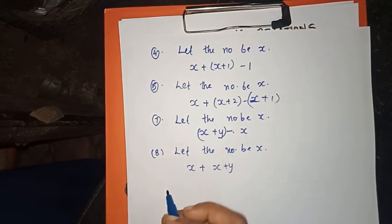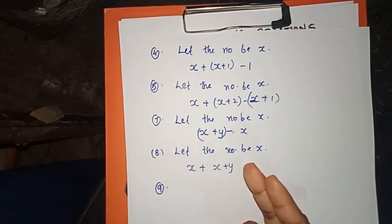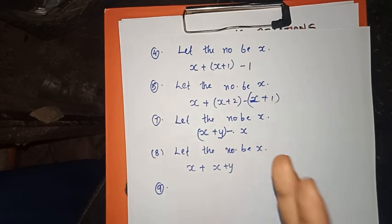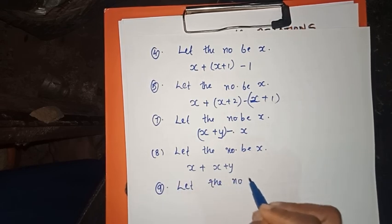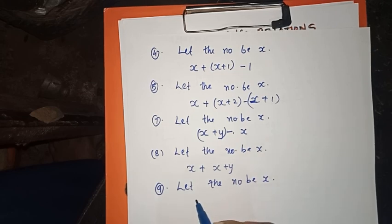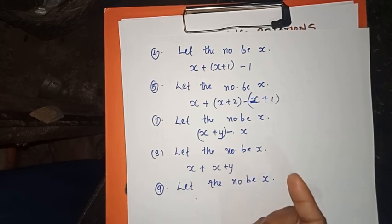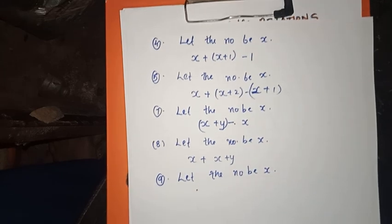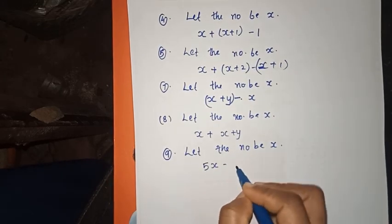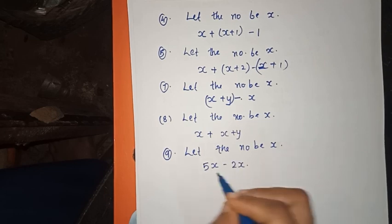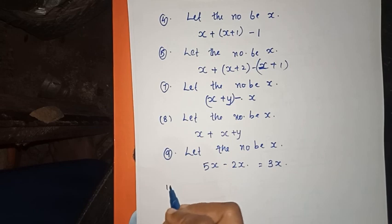The next question: subtract two times the number from five times the number. Two times the number is 2x, and five times the number is 5x. So 5x minus 2x equals 3x.